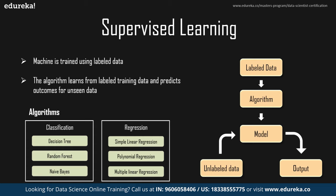Regression is a statistical method to model the relationship between dependent (target) and independent variables, and predict the values of the dependent variable. It is used when the outcome you wish to predict is continuous. There are various regression algorithms like simple linear regression, polynomial regression, and multiple linear regression.